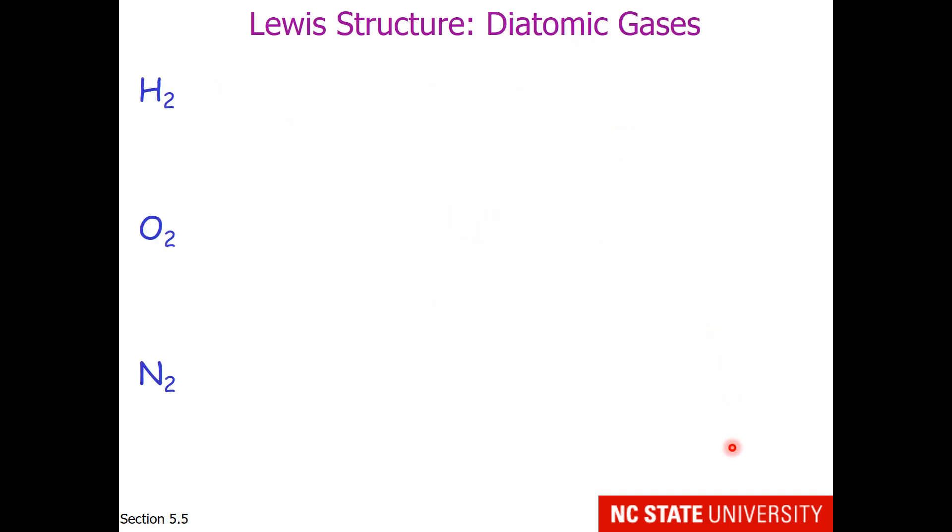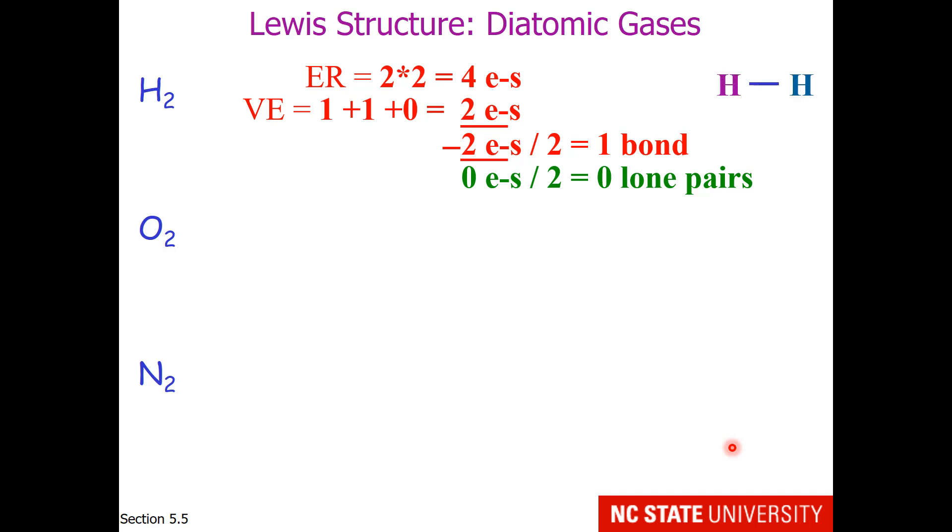So why do hydrogen, oxygen, and nitrogen adopt diatomic molecules in their elemental state? They have stable Lewis structures that way. If we were going to draw hydrogen, I think it would be overkill to go through the math, but you would honestly come up with 1 bond between the hydrogen atoms.